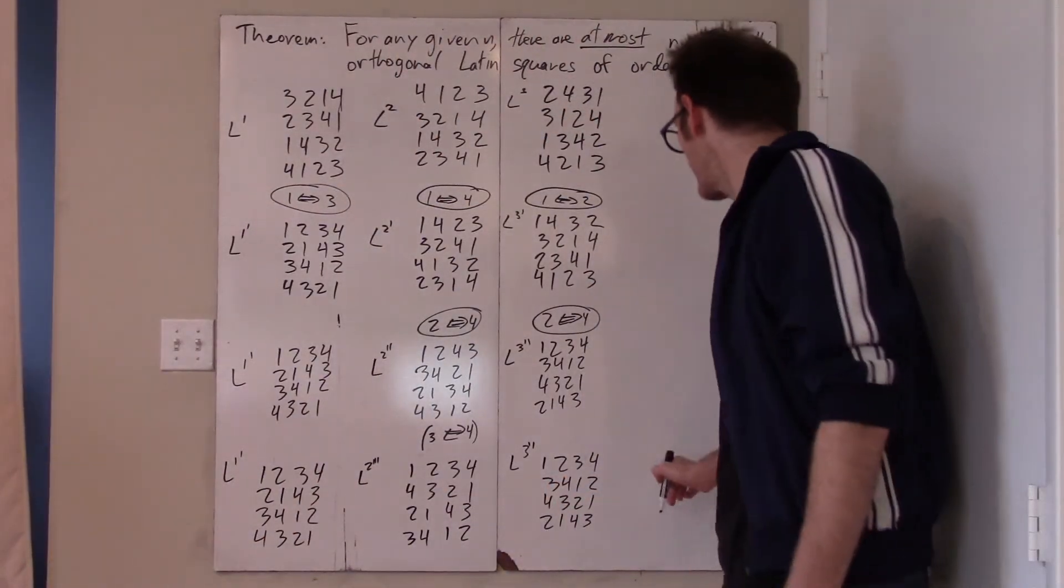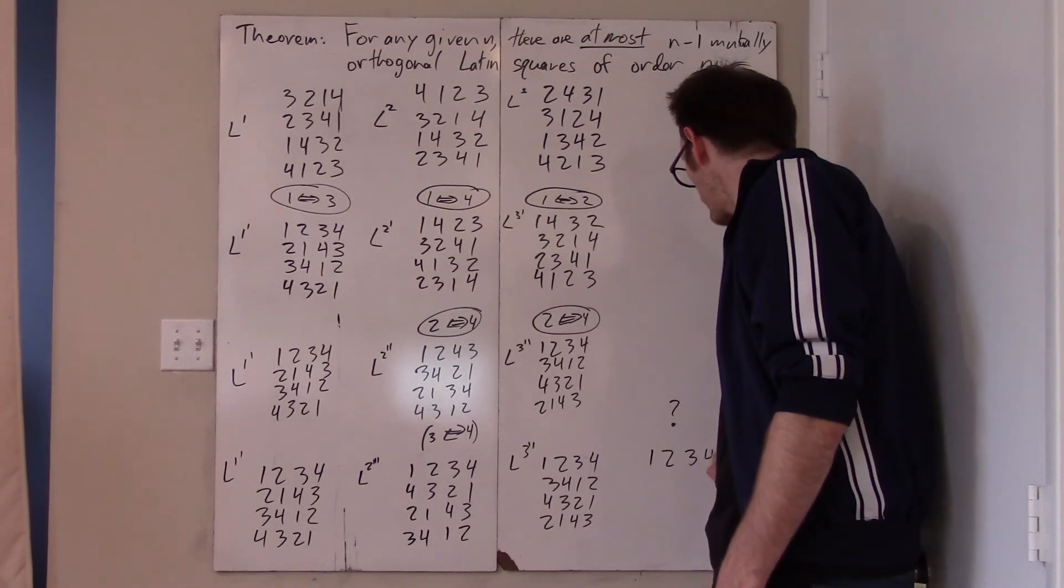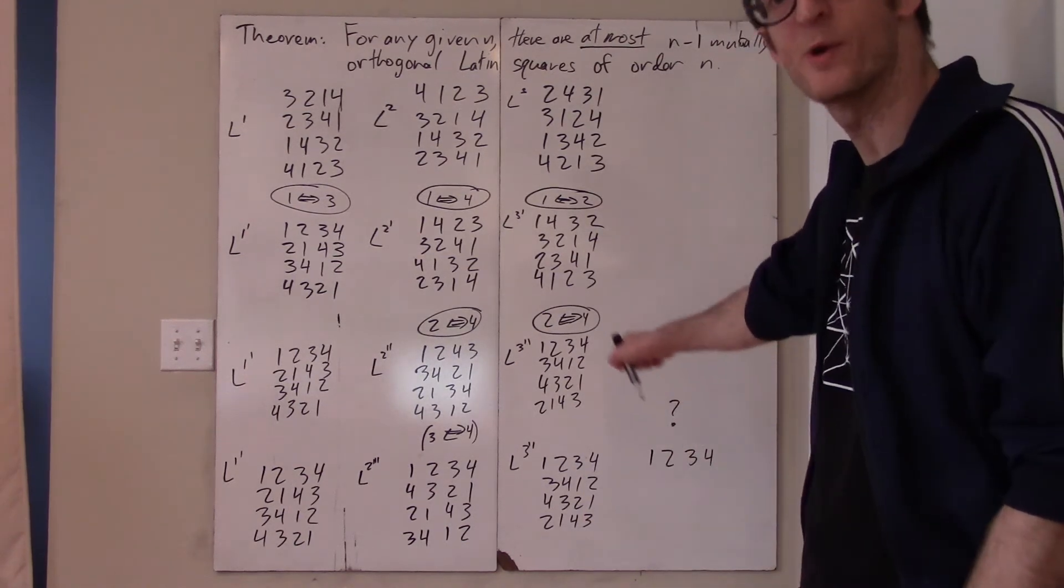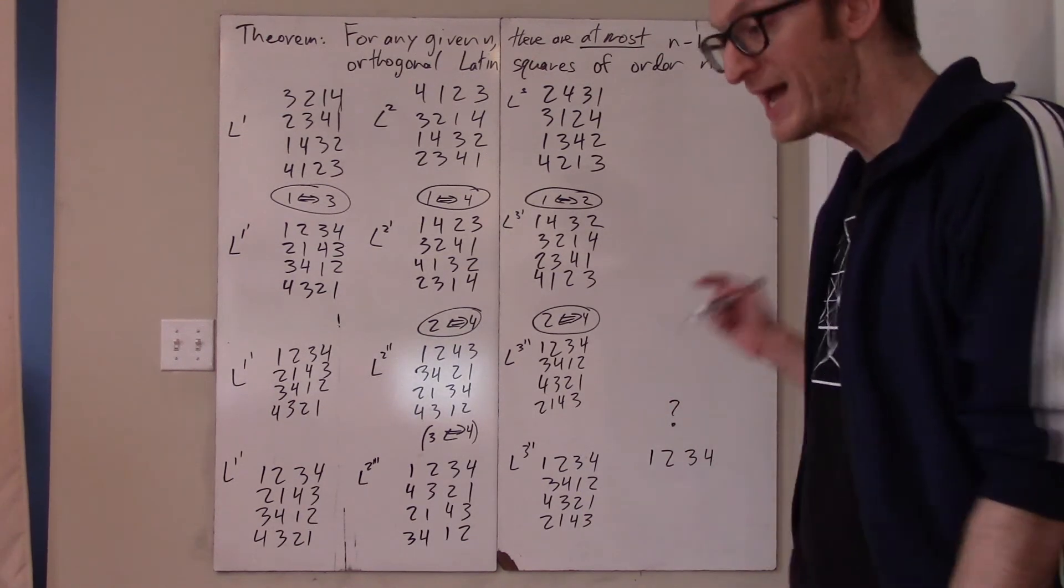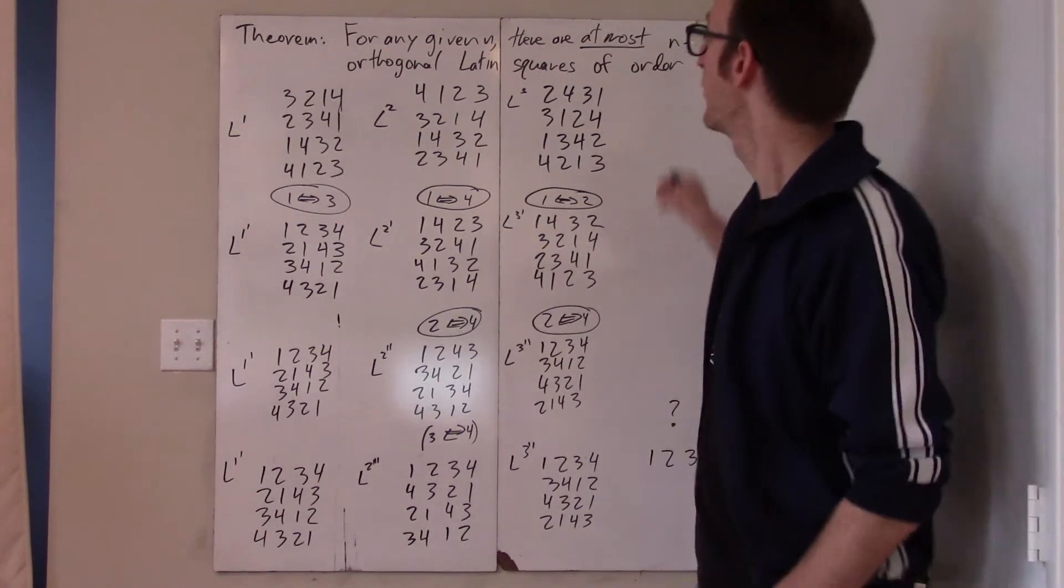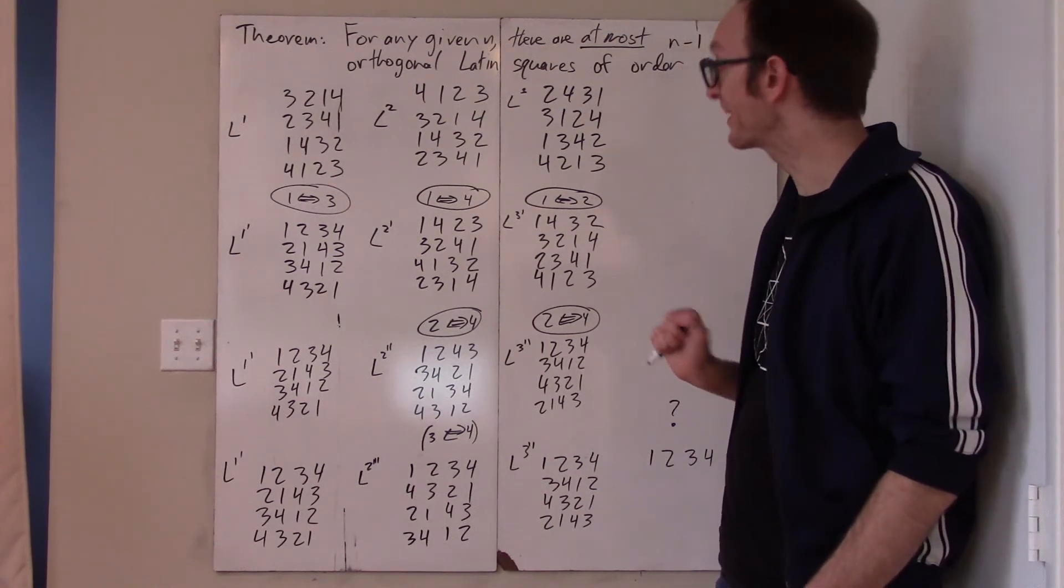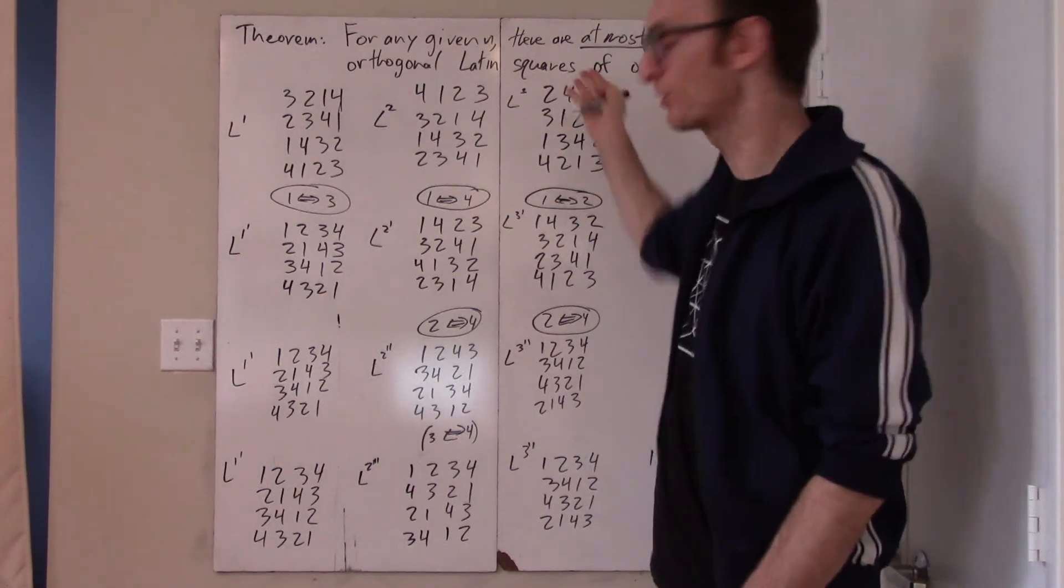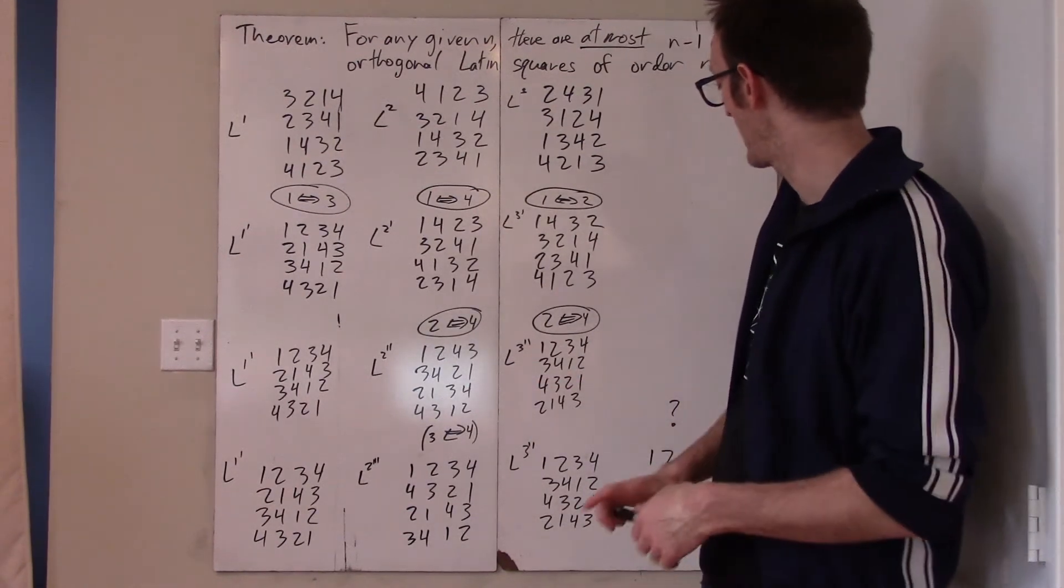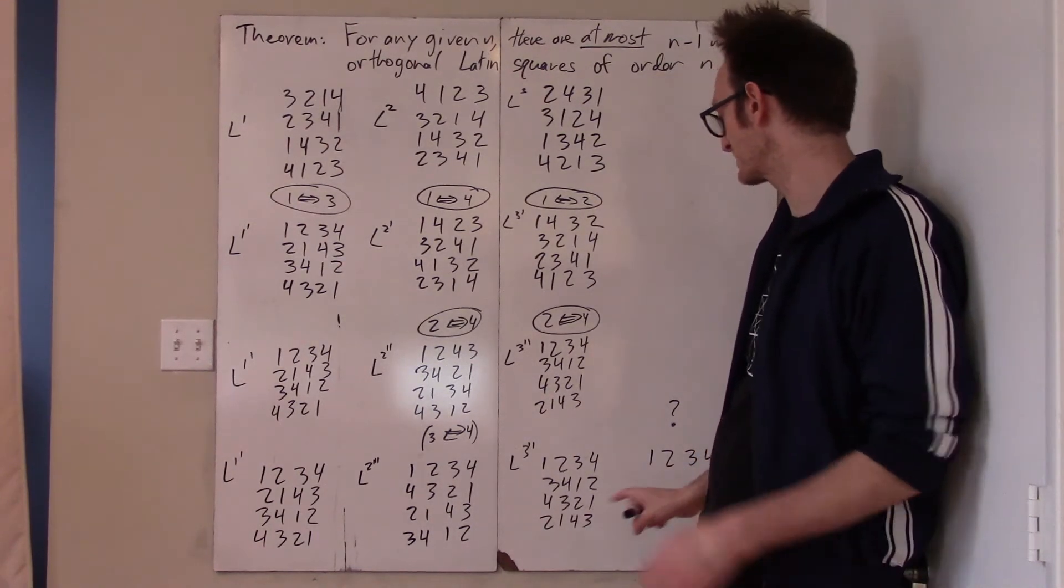And now we shall claim that there cannot possibly be yet another mutually orthogonal Latin square of order 4 also beginning with 1, 2, 3, 4. And if there can't be one beginning with 1, 2, 3, 4, then there can't be one, then there can't be 4 at all. Because if you had 4 to begin with, you could convert them via this process into 4 which all started with 1, 2, 3, 4. And why is it impossible to find another mutually orthogonal Latin square?